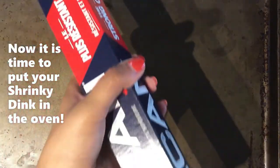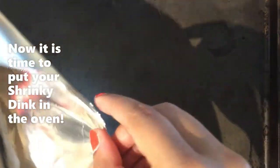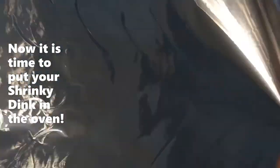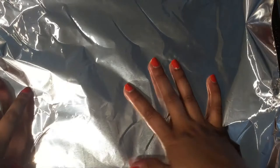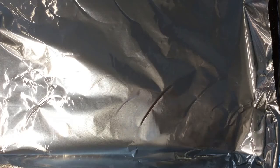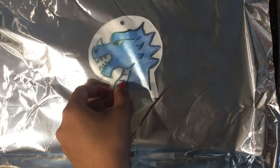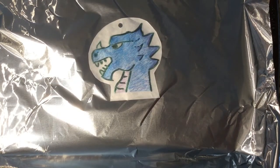Now it is time to put your Shrinky Dink in the oven. Preheat your oven to 325 degrees and line a baking tray with aluminum foil. Place your cutout design color-side up on the tray, then place your tray in the oven.